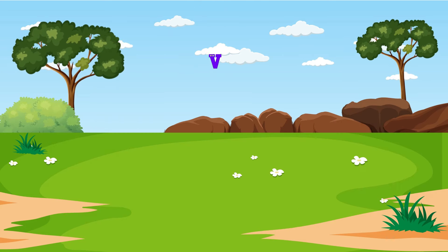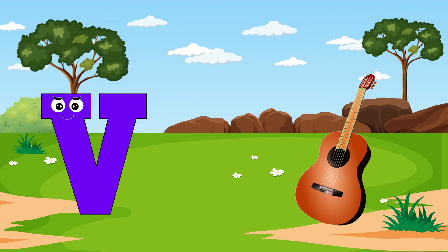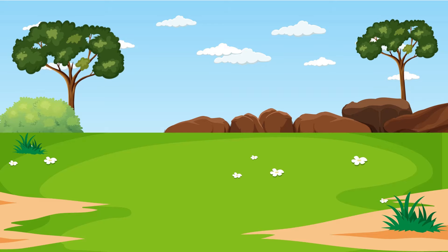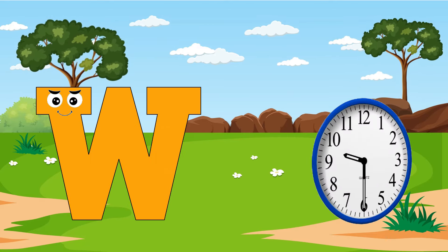Tiger. U is for Umbrella, U, U Umbrella. V is for Violin, V, V.